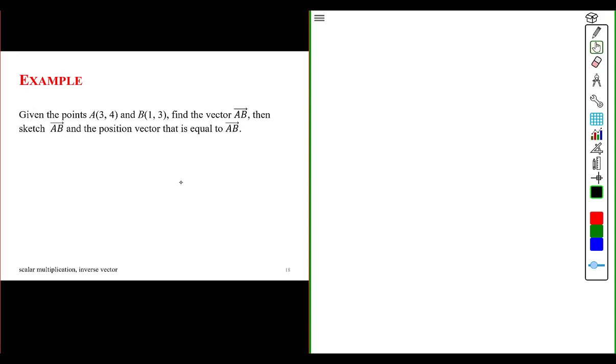Let's do an example. Given the points A at coordinates 3 and 4, and B at coordinates, find the vector, then sketch vector in the position vector that is equal to vector. So spend a couple of minutes trying to do this problem, pause the video when you're doing it, and once you do the problem, you can link to another video in which I do the solution for this particular problem.